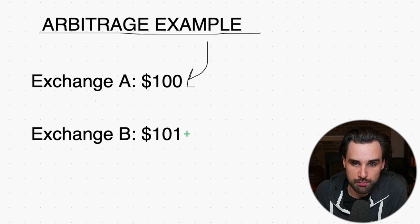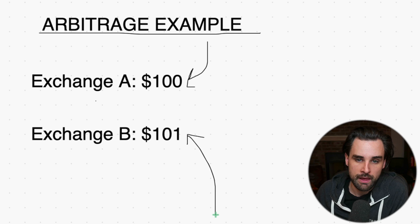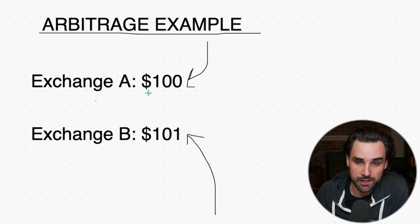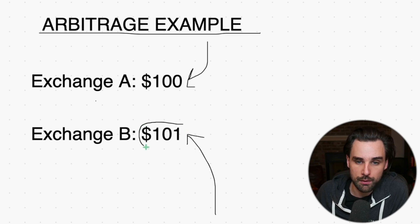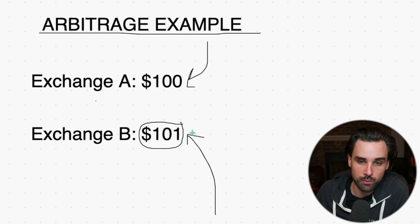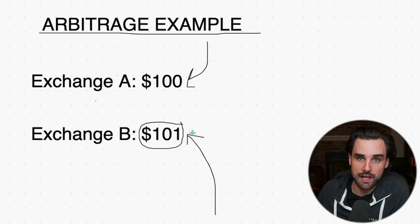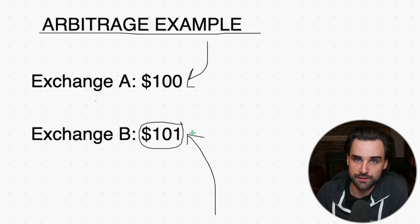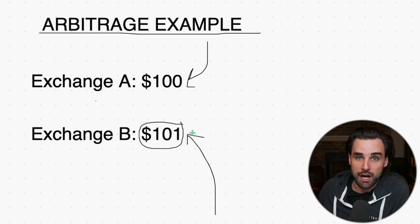Then sell it at the difference for $101. Sure, it's only a $1 difference, but what if you multiply it across millions of dollars? That could potentially be a hefty profit for that one single trade.